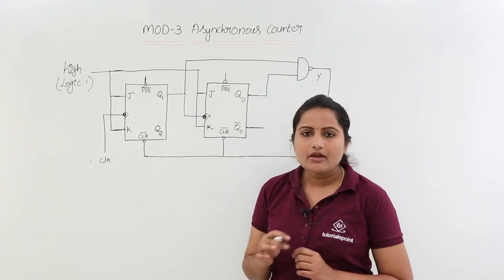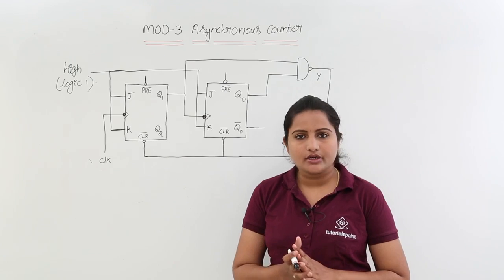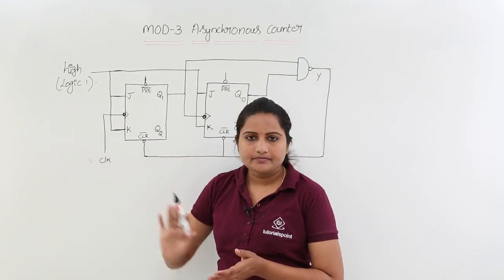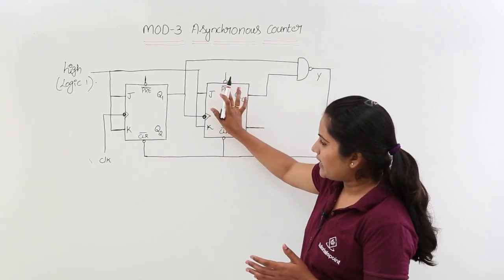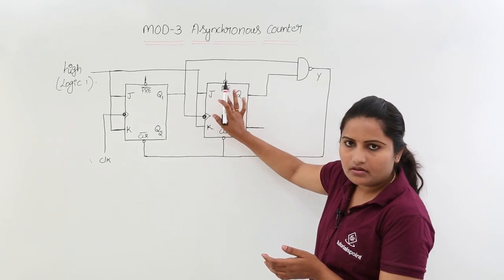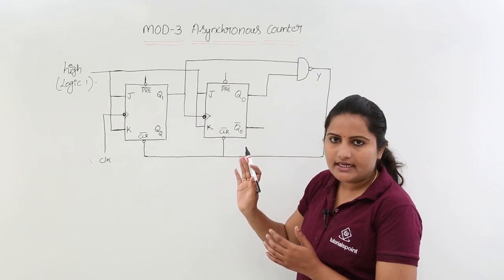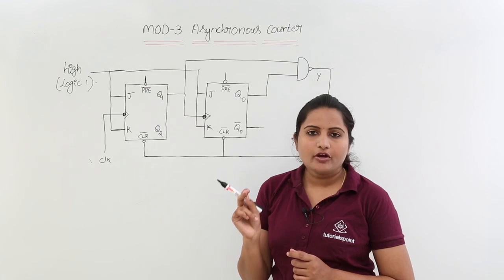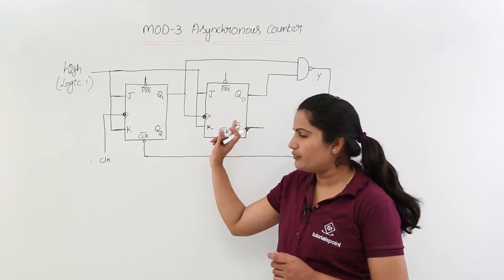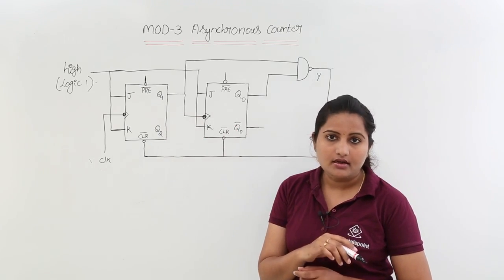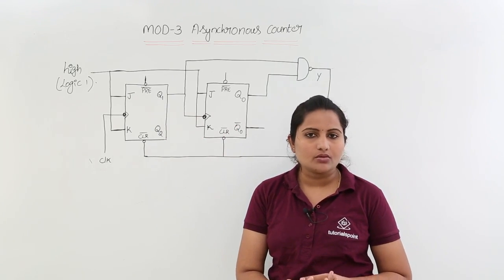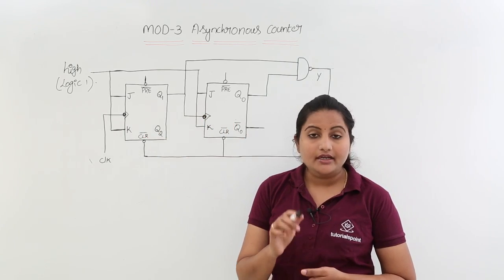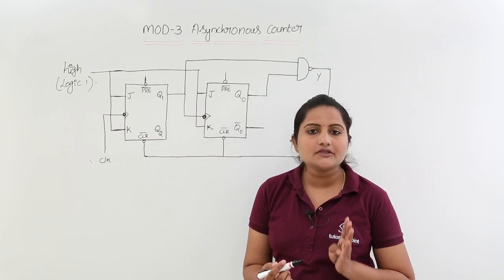In this asynchronous configuration, only the first flip-flop receives the external clock; from the second flip-flop onwards, the clock is taken from the output of the previous flip-flop. The bubble indicates negative-edge triggering, meaning flip-flops become active when the clock is zero. For two flip-flops you have 2^2 = 4 states, which we already discussed in the asynchronous counters topic.